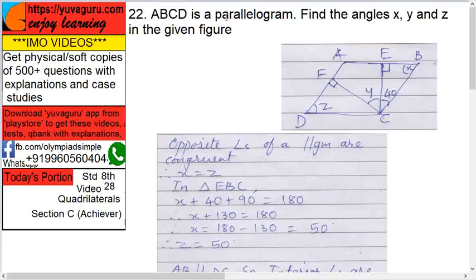ABCD is a parallelogram. Find angles X, Y, and Z in the given figure. What is given in the figure? These two are the altitudes, meaning heights, so CE is perpendicular to AB and CF is perpendicular to AD. Now we have to find X, Y, and Z, and one angle is given as 40 degrees.